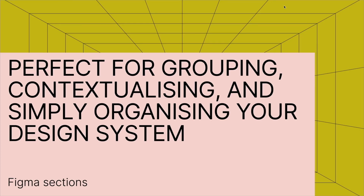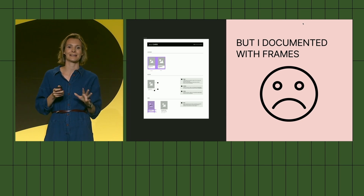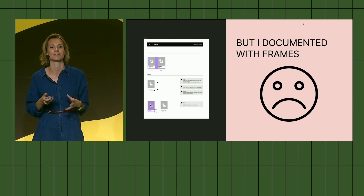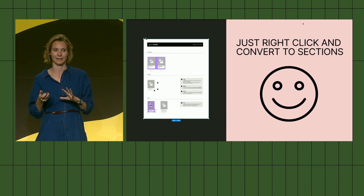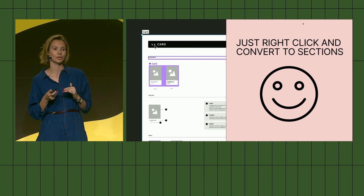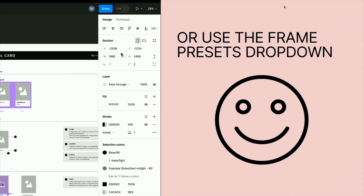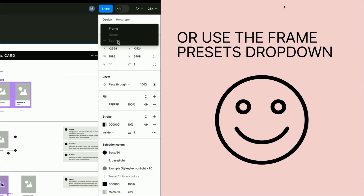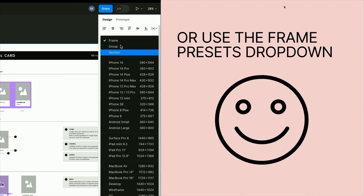In short, sections are perfect for grouping, contextualizing and simply organizing your design system. But what if you've already set up all this great documentation on frames? Don't worry — you can simply right-click any frame and convert it into a section. You can also use the preset dropdown for frames to convert between frames, sections and even groups.